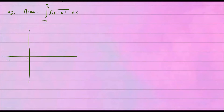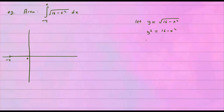If you draw this geometric shape, you'll see it looks something like this — we're looking at negative 4 to 0, so this is negative 4 and this is 0. To sketch the region, let y equal f of x, and let y equal √(16 − x²). If you square both sides, y² equals 16 minus x², and this looks like a circle.